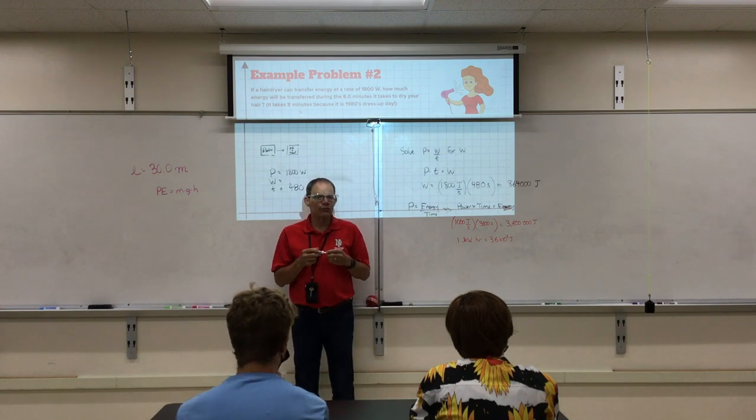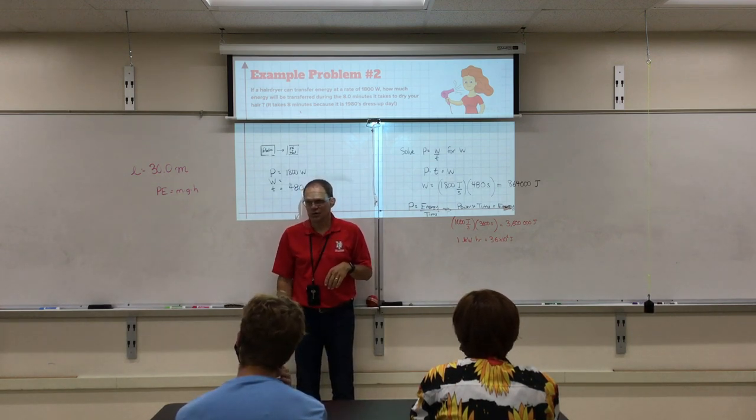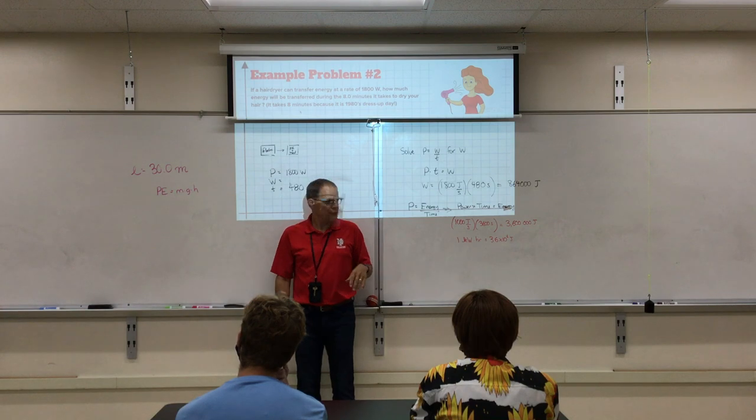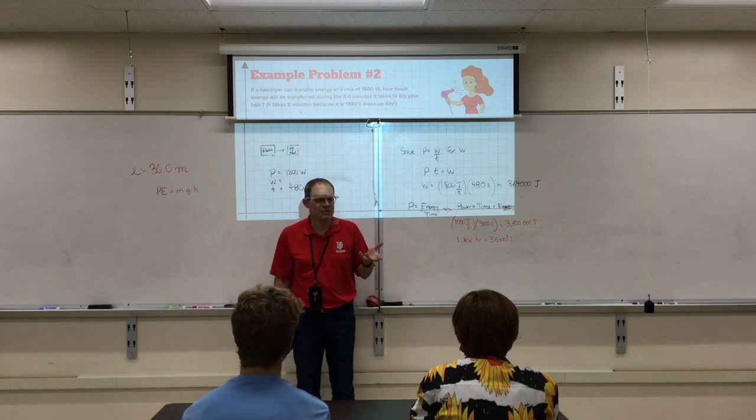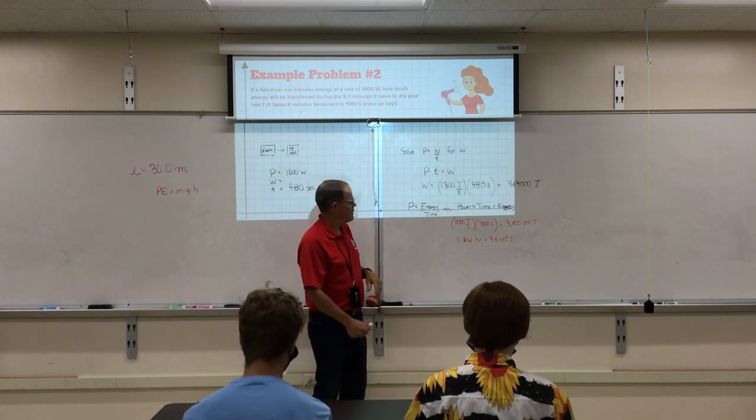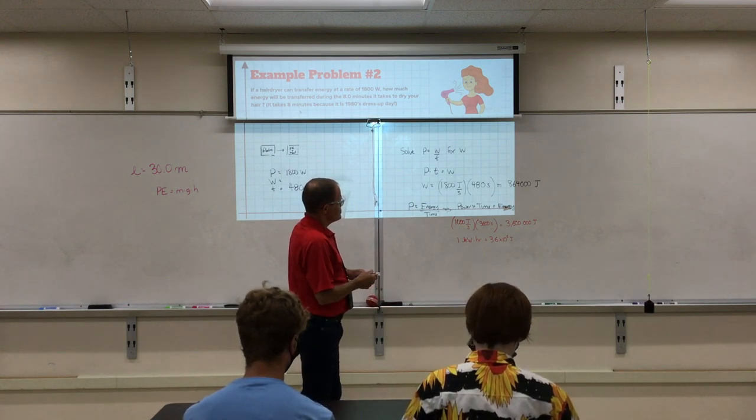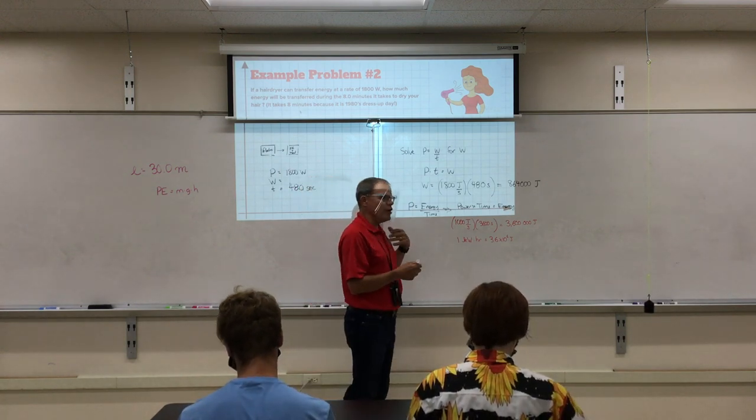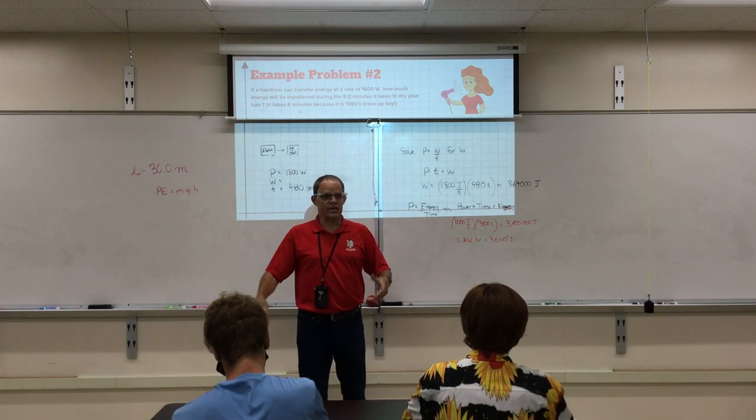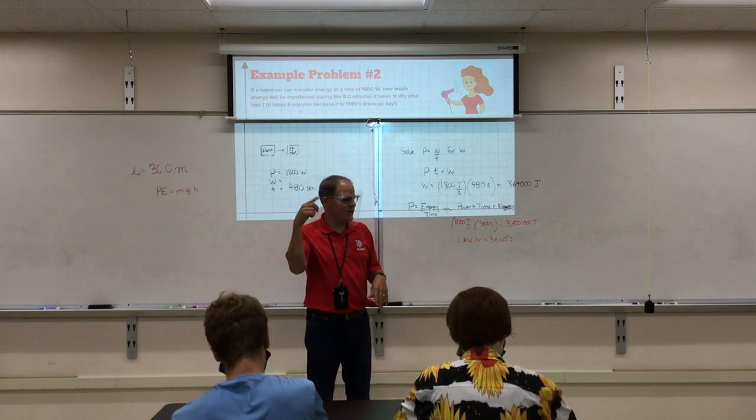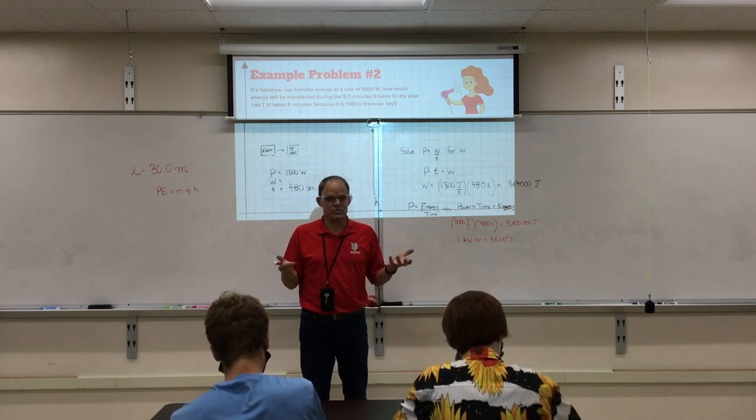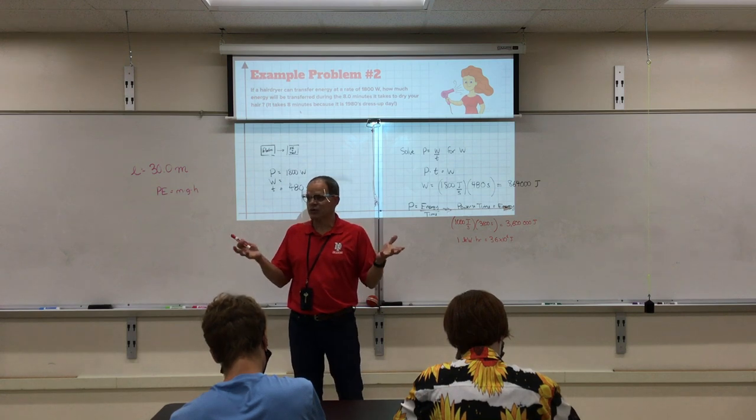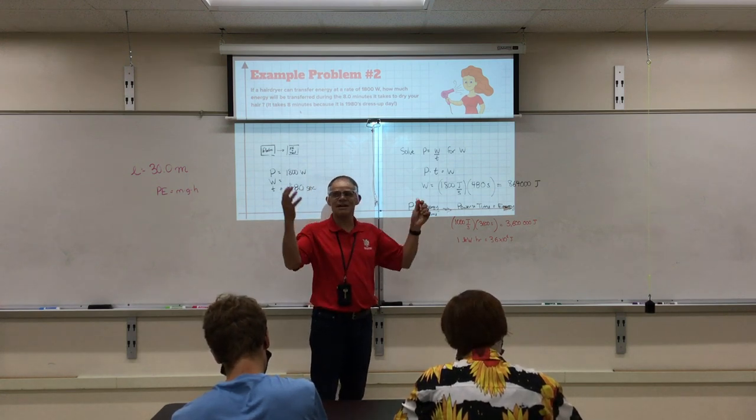So a kilowatt hour is a unit of energy, and it's 3.6 million joules. And that's the goofy unit they sell us electricity in. Kilowatt hours. So if you use 1000 joules every second for an entire hour, you'd use a kilowatt hour of energy. 3,600, okay? So it turns out that Duke Energy charges us 10 cents for each kilowatt hour. So they've got a meter outside your house, and it spins when you use electricity, and they read it every month, and they send you a bill based on how much you use, how many kilowatt hours. It's their billing unit. So a kilowatt hour costs you 10 cents.